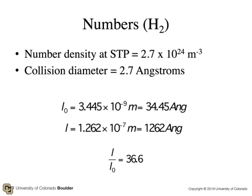So here are some numbers. These numbers happen to be for hydrogen. The number density at standard temperature and pressure from the ideal gas law is 2.7 times 10 to the 24 per meter cubed. The collision diameter is 2.7 angstroms. So the average spacing between molecules is 34.45 angstroms. The angstrom is 10 to the minus 10 meters. But the mean free path, on the other hand, is 1,262 angstroms. In other words, the ratio of the mean free path to the average spacing is 36.6.